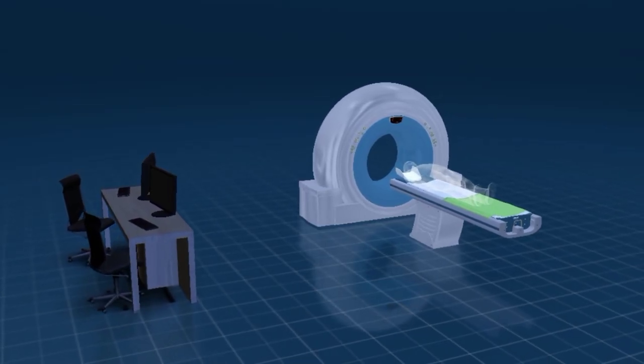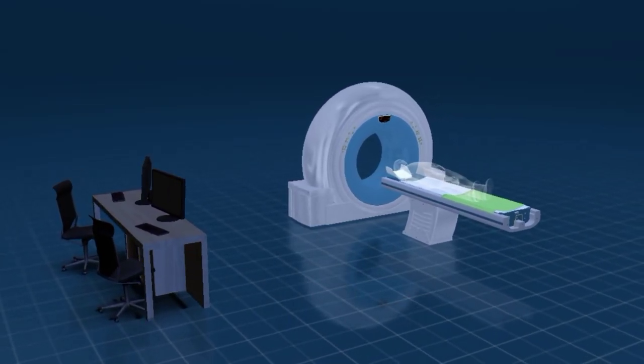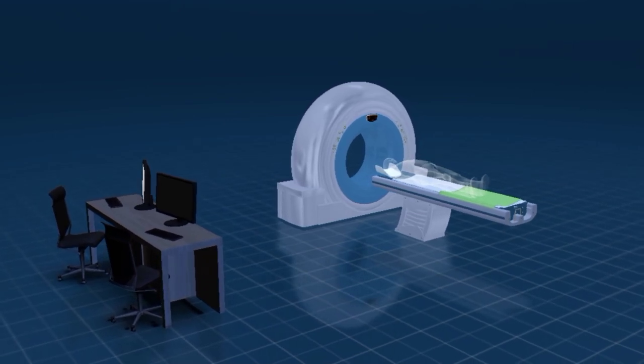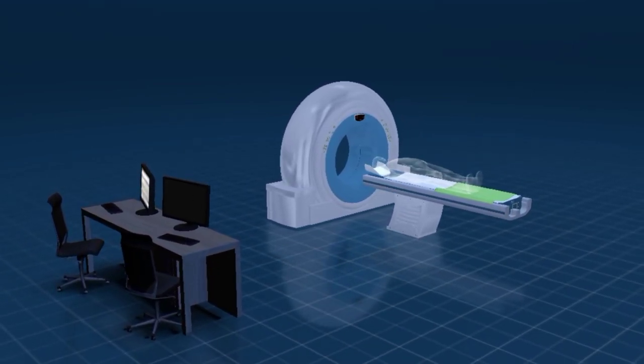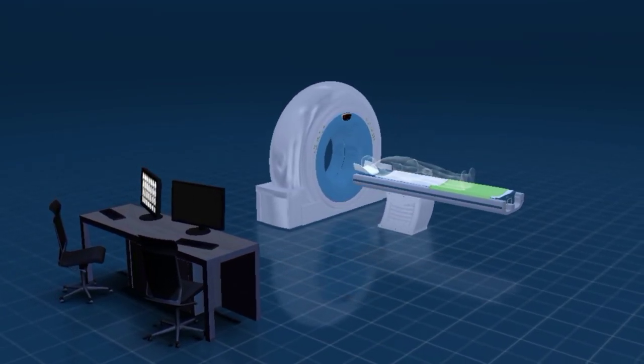CT scan. Certain tissues cannot be distinguished in conventional x-ray images, as they absorb nearly the same amount of x-rays.